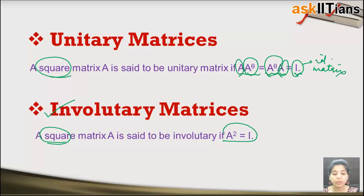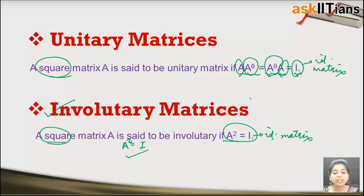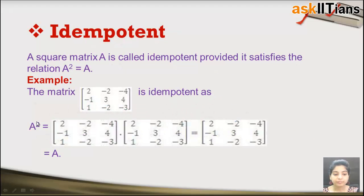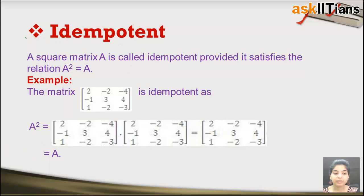Next is the involutory matrix. A square matrix A is said to be involutory if A² equals the identity matrix I. So if you calculate A squared and it comes out to be the identity, you can say A is involutory.